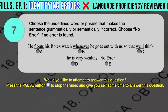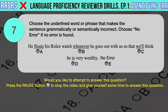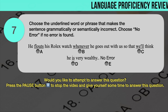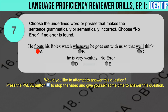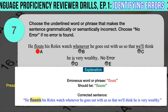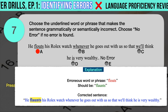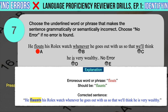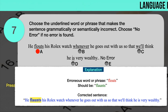Drill question number 7. Choose the underlined word or phrase that makes the sentence grammatically or semantically incorrect. 'He flouts his Rolex watch whenever he goes out with us so that we'll think he is very wealthy.' The underlined words are: A. Flouts, B. Whenever, C. Will, D. His. The correct answer is A. The erroneous word is 'flouts' — it should have been 'flaunts.' The sentence is grammatically correct but semantically incorrect. 'Flout' means to openly disregard, whereas 'flaunt' means to display something ostentatiously, which is what the sentence intends. Correct sentence: He flaunts his Rolex watch whenever he goes out with us so that we'll think he is very wealthy.